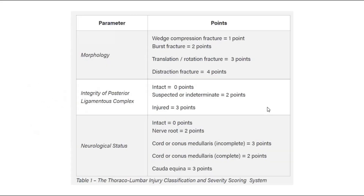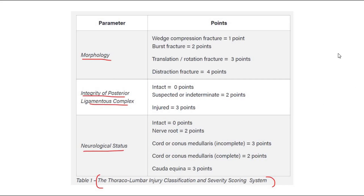This table shows the thoracolumbar injury classification and severity scoring system, based on the morphology of fracture, the integrity of the posterior ligamentous complex, and the neurological status of the patient. Injuries that score 5 or more are considered unstable and are usually treated surgically, while those that score 3 or less are usually considered stable and treated conservatively.